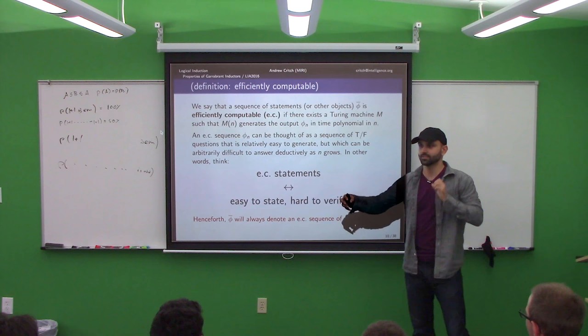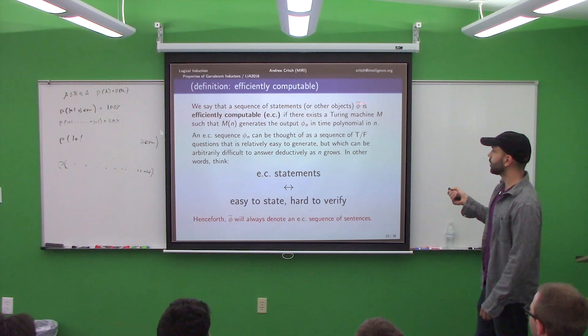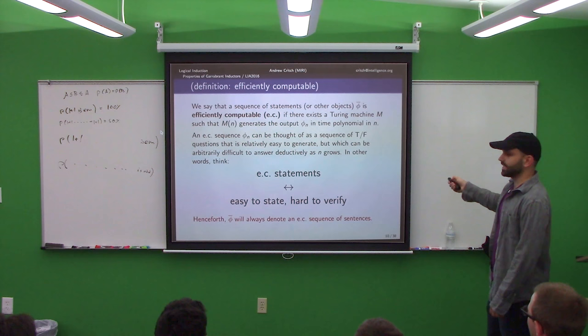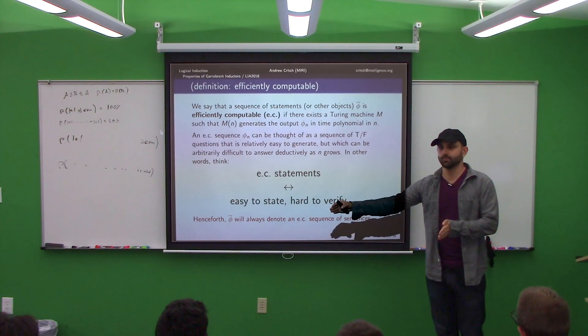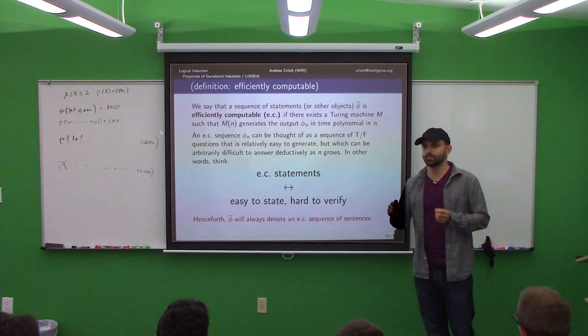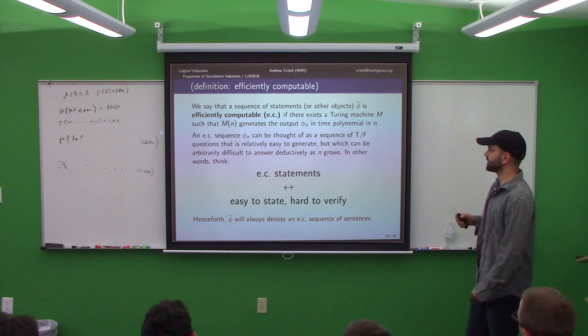Now we're getting to questions where the question is getting harder as the inductor thinks longer. We're going to say that a sequence of statements phi is efficiently computable if they can be spit out in polynomial time in n — the nth one can be written down by an algorithm running in time polynomial in n. And we only require the sentence be written down in that time, not that it be proven or parsed in polynomial time. So efficiently computable sequences of sentences you should think of as things that are easy to write down or state, but potentially very hard to verify.